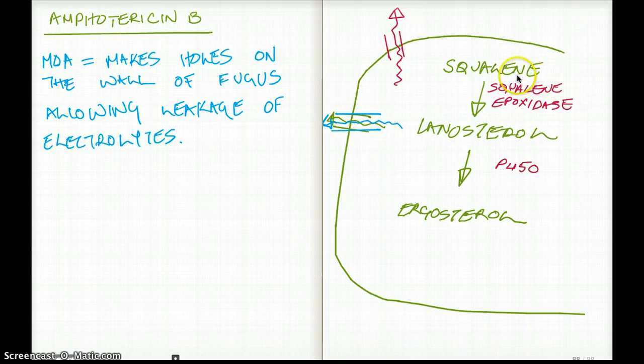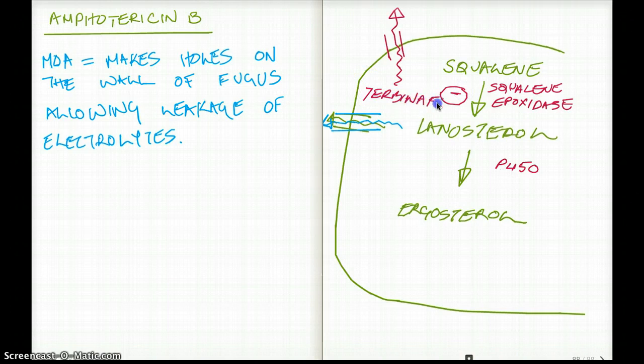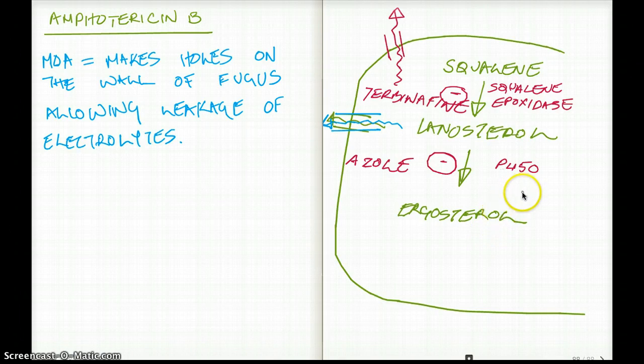Drugs that inhibit squalene epoxidase is called terbinafine. And drug that inhibit the P450, the P450 inhibitor that inhibits the conversion of lanosterol to ergosterol is going to be the azoles, ketoconazoles, fluconazoles, all those azoles. So these two drugs is going to inhibit protein synthesis inside the fungus.